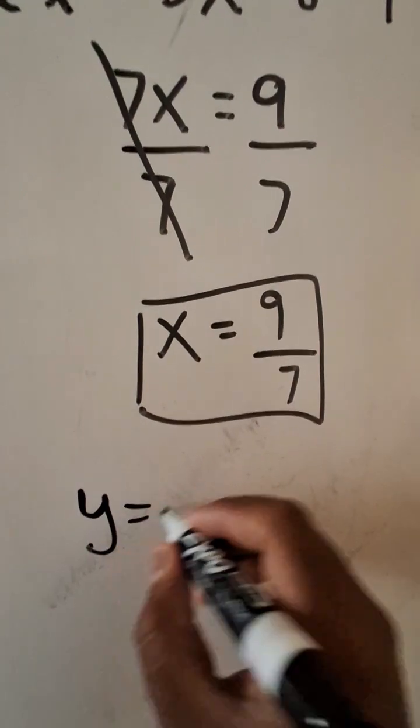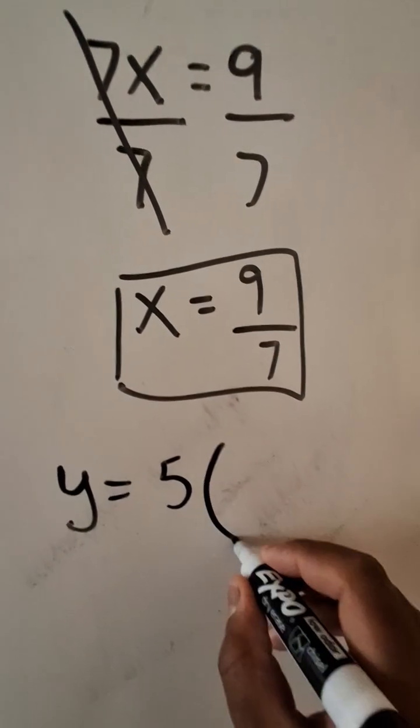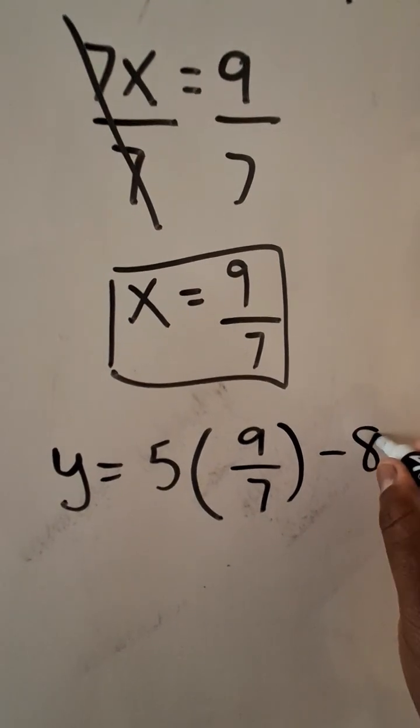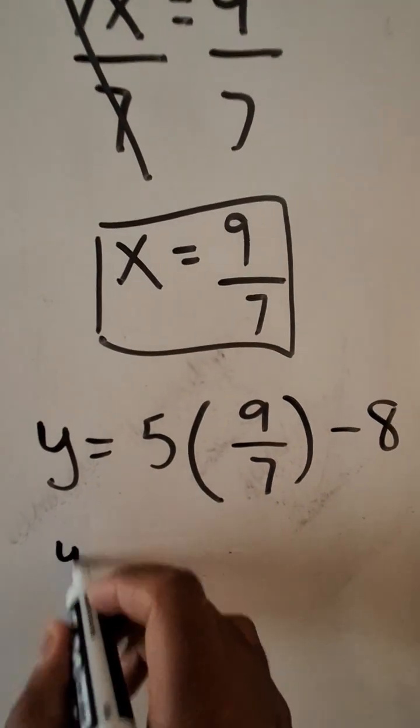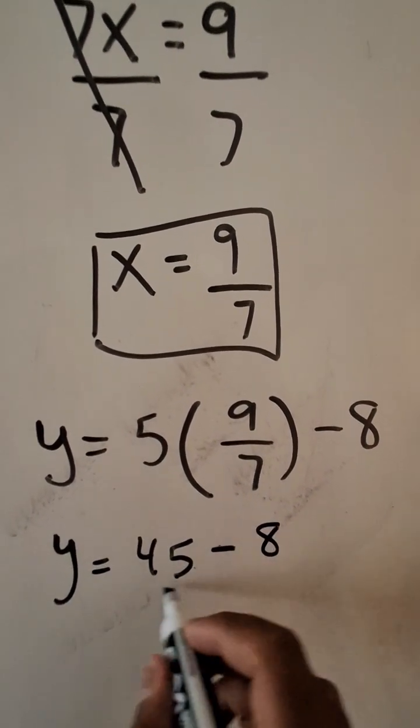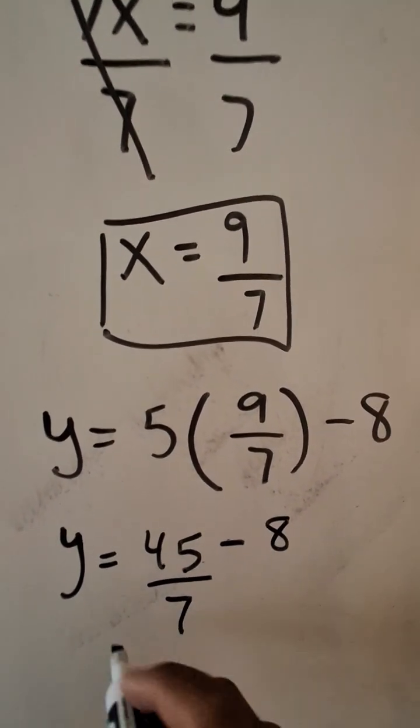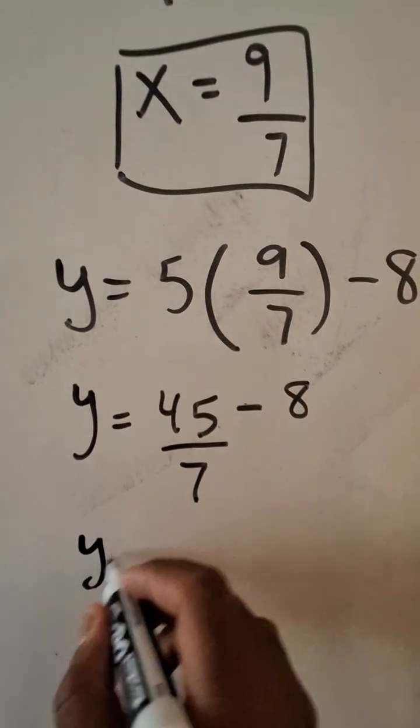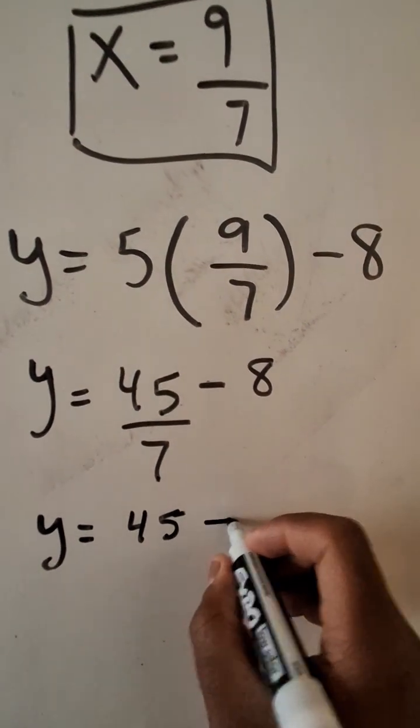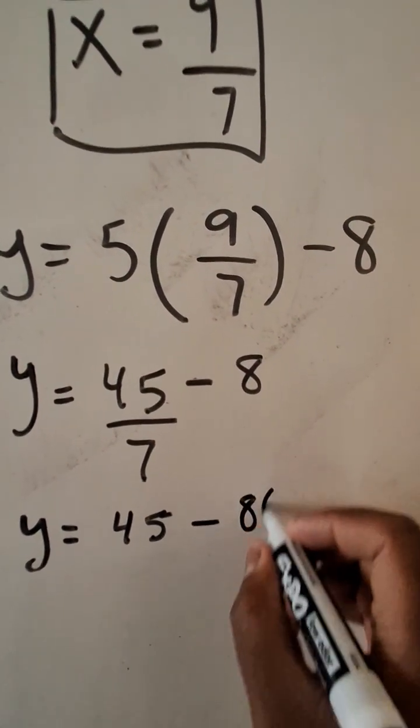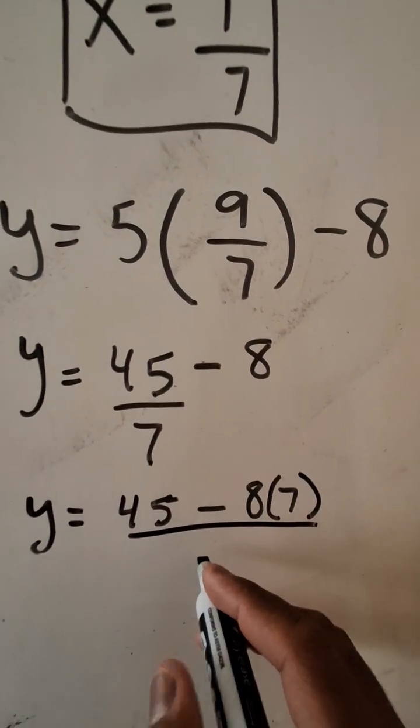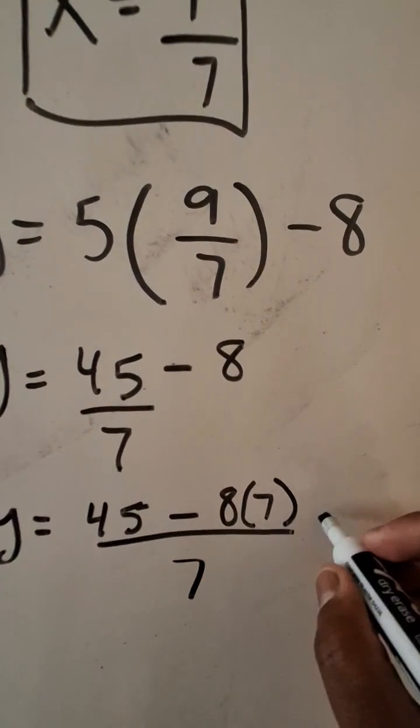Okay, now we will go back to our original y equation. So y is equal to 5, substitute x, 9 over 7, subtract by 8. And now we have y is equal to 45 minus 8. Oh, sorry, y is equal to 45 divided by 7. Subtract that by 8. And now we will multiply the 8 by 7 so that we can have one single denominator. So that's 7.